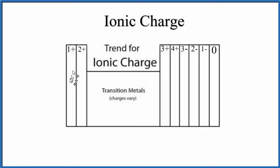Then we skip the transition metals—that's what we're interested in in this video. We go 3+, 4+ or 4-, then 3-, 2-, 1-, and 0. That's very useful to understand the general trend for ionic charge on the periodic table, though it's a bit of an oversimplification.